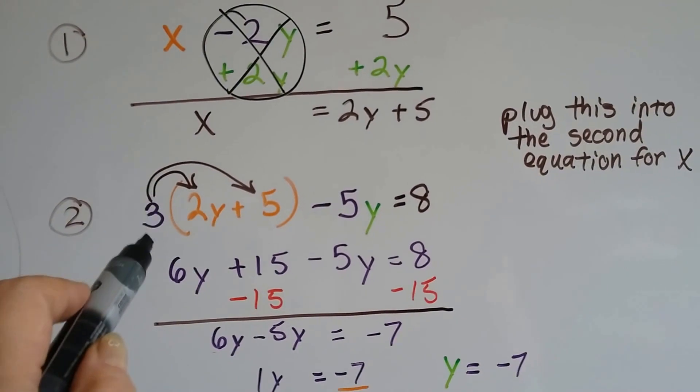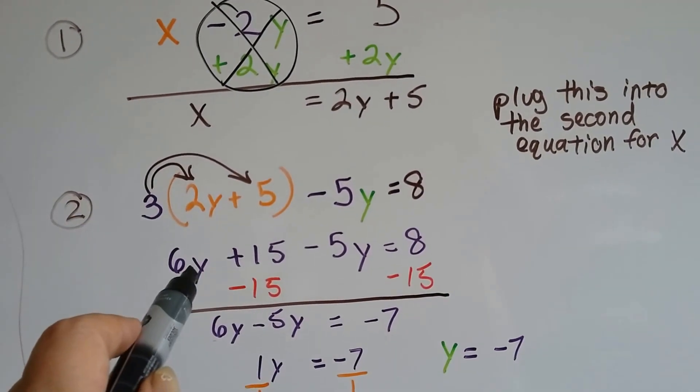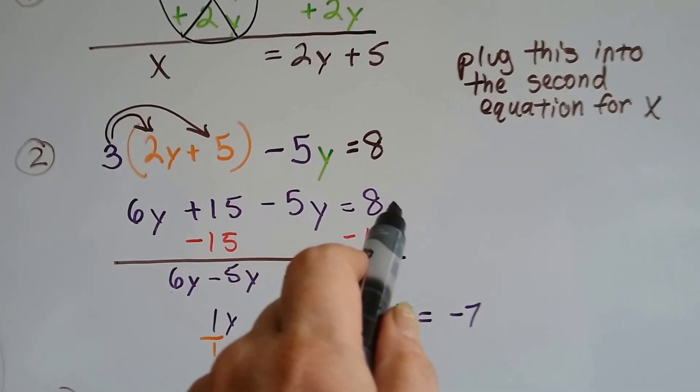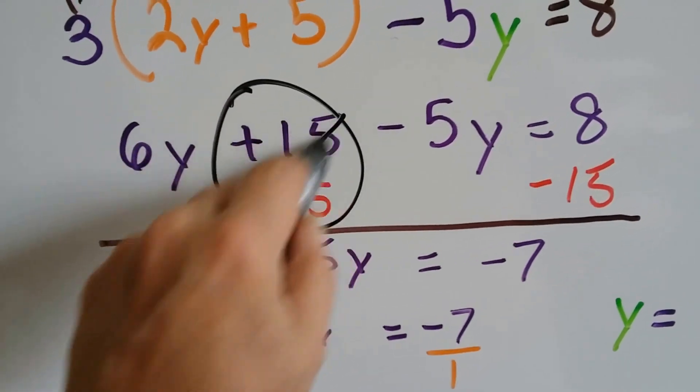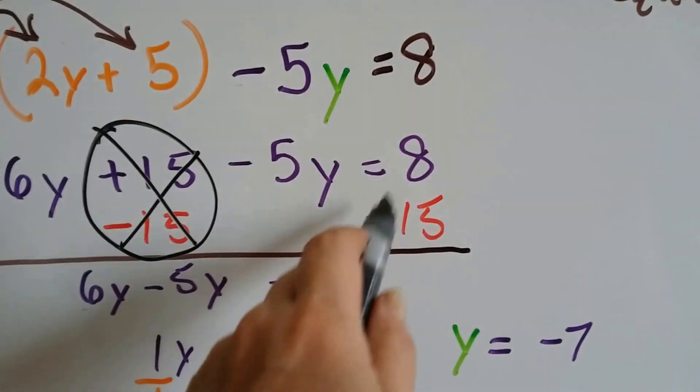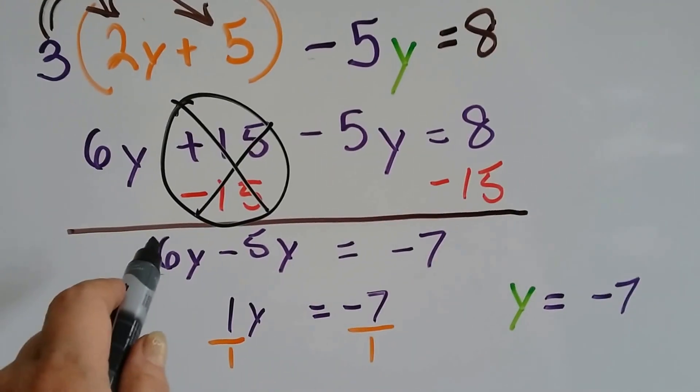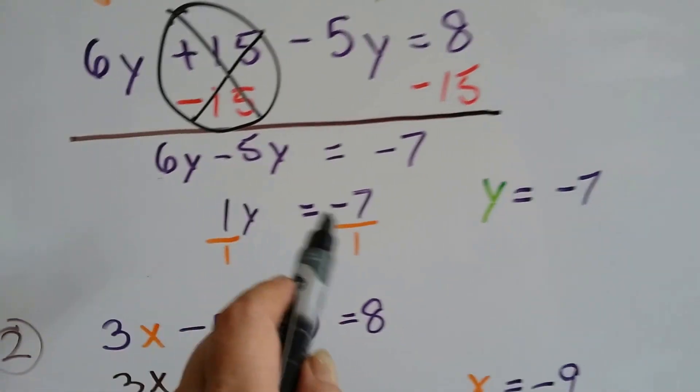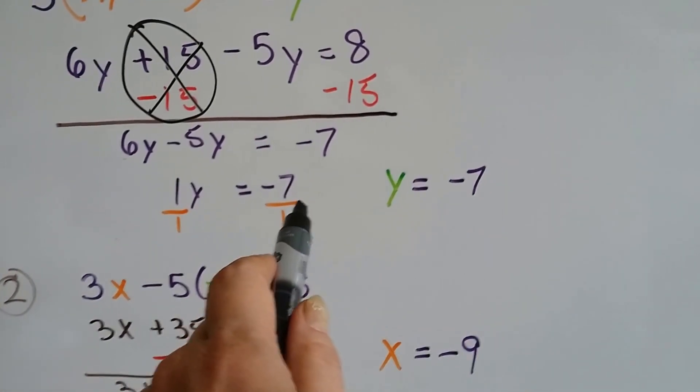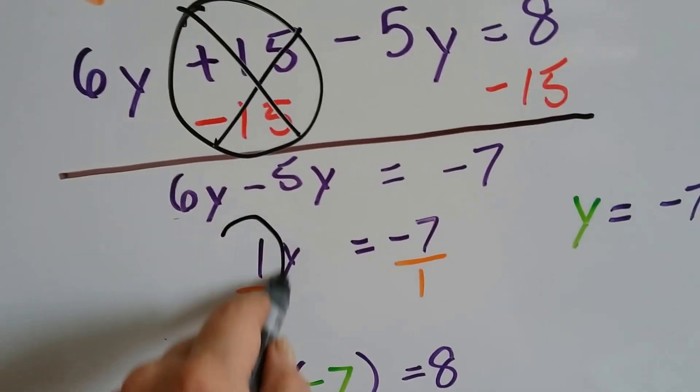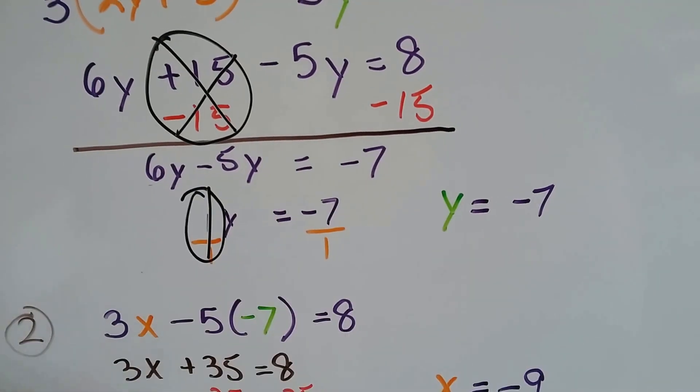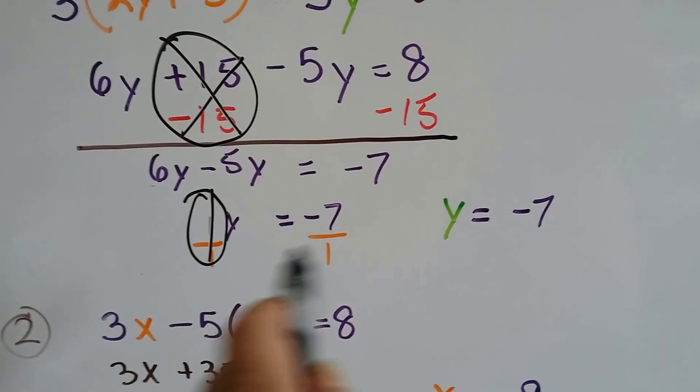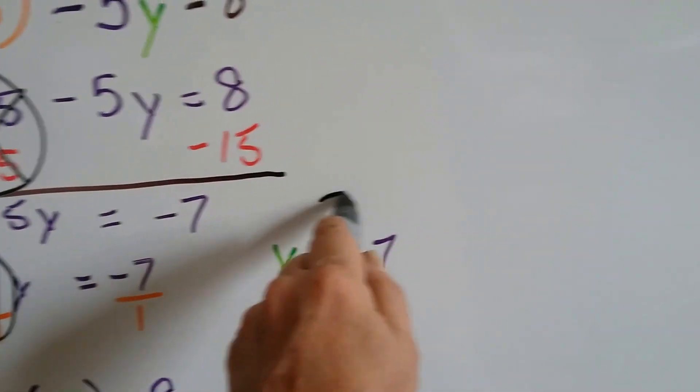All we have to do is distributive property. 3 times 2y is 6y, and 3 times 5 is 15. That's a plus 15. We drop down our -5y, and it equals 8. We make a zero pair here by subtracting 15, and 8 take away 15 is a negative 7. This 6y minus 5y right here makes a 1y. Well, then that means y is equal to -7. Remember our friend the invisible 1? It said 1y was equal to -7. I just did the extra step of division to show how it was done. So we know y is equal to -7. We've now solved for y.